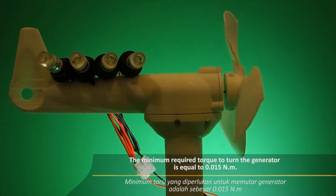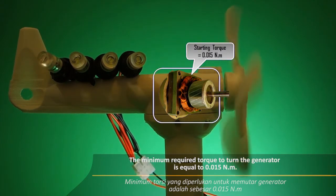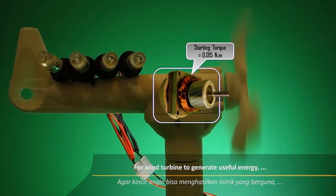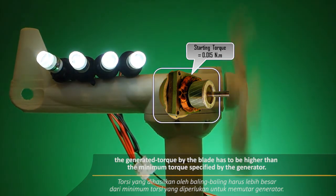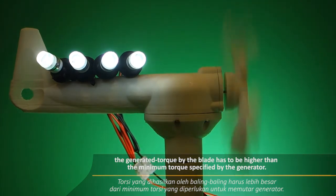The minimum required torque to turn the generator is equal to 0.015 Nm. For the wind turbine to generate useful energy, the generated torque by the blade has to be higher than the minimum torque specified by the generator.